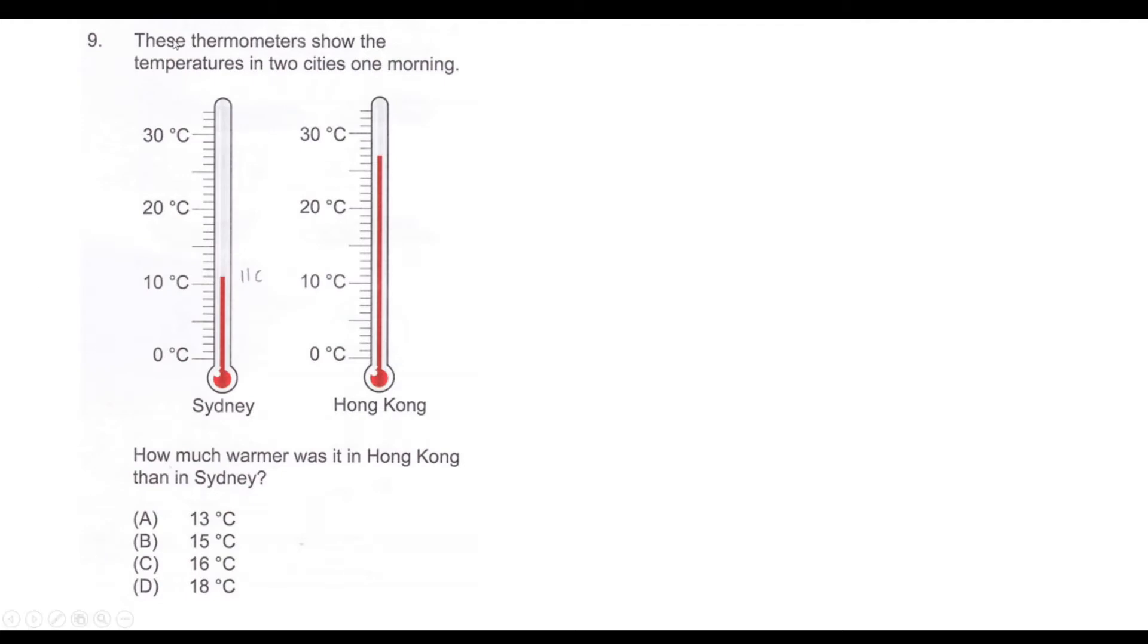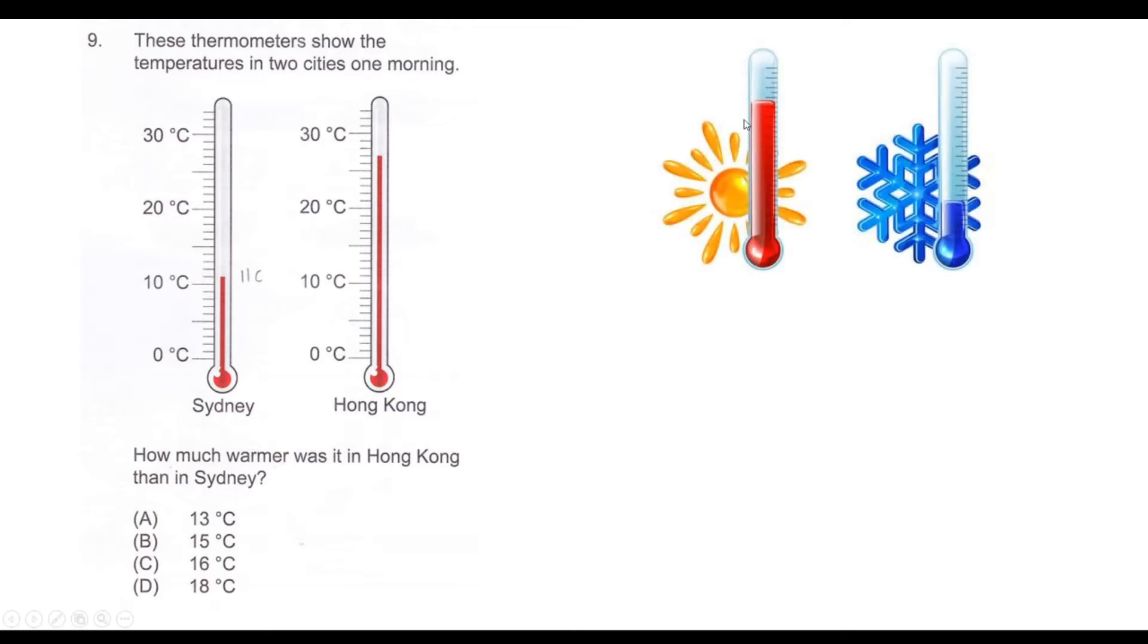These thermometers show the temperatures in two cities one morning. How much warmer was it in Hong Kong than in Sydney? Warmer means a higher temperature. In Sydney, the temperature was 11 degrees Celsius and in Hong Kong it was 27 degrees Celsius. We need to find the difference between 27 and 11, which equals 16. Hence, our answer is option C.